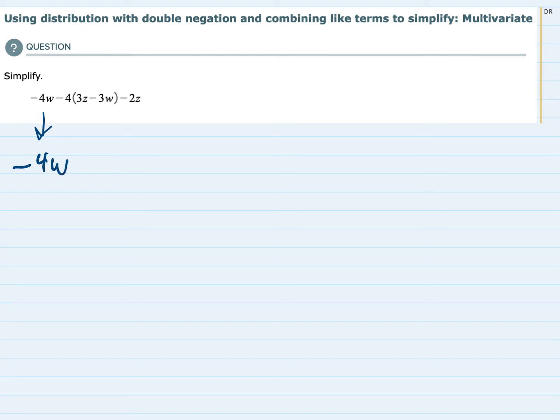But I said doing what I can as I go, and this next part of the expression, this minus 4 times the parentheses here, is where I need to use distribution. So everything inside those parentheses needs to be multiplied by the minus 4.